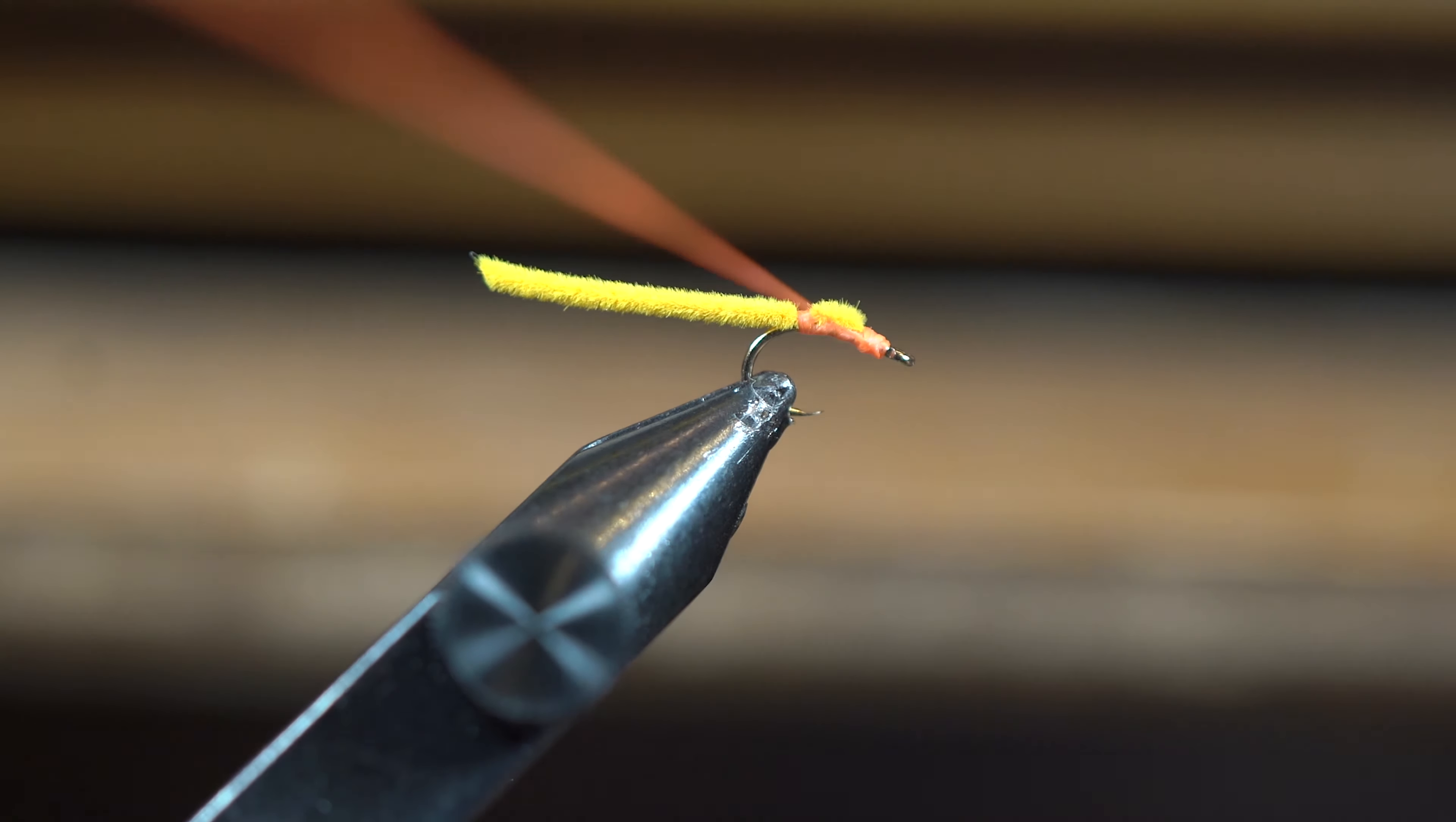I burn the edge of that tail so it gets a point on it. I'm actually going to burn a little bit more just so I get a good taper. There we go—you can see that worm just tapers down to a point like a natural worm.